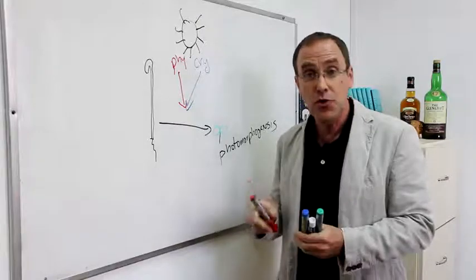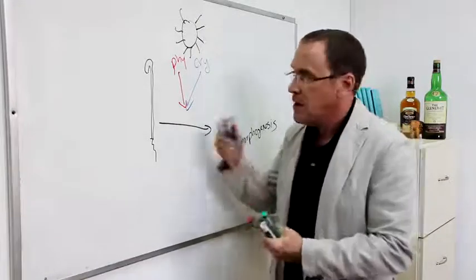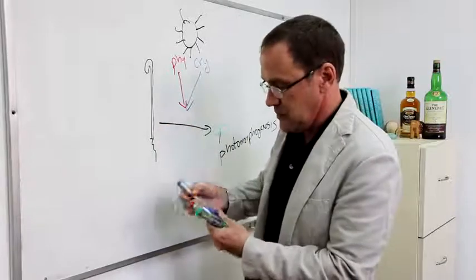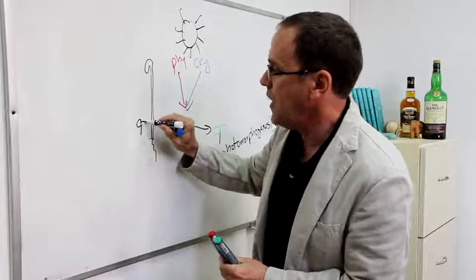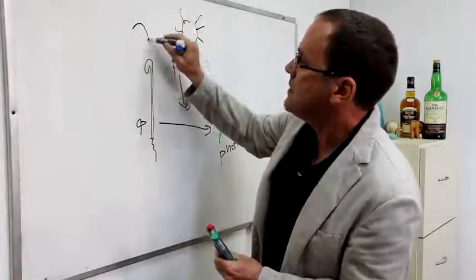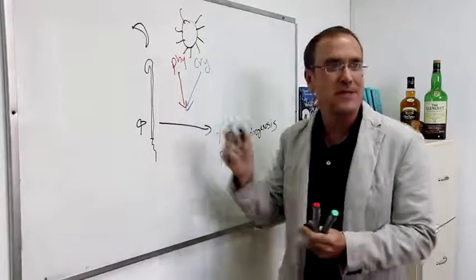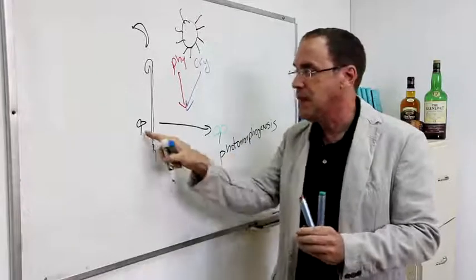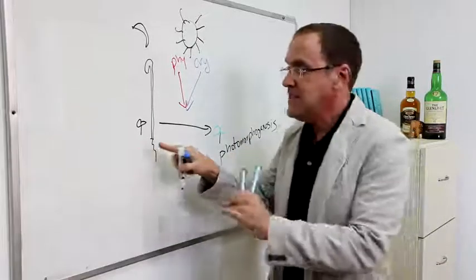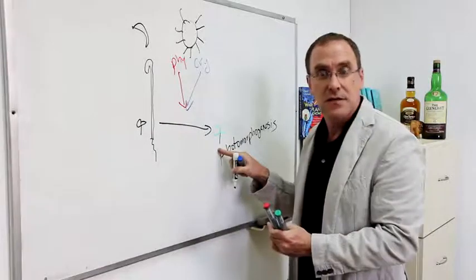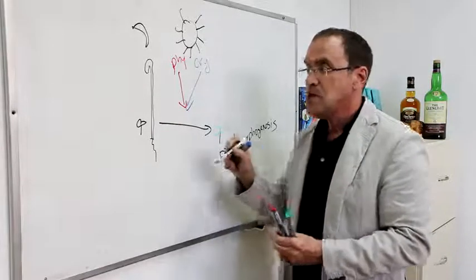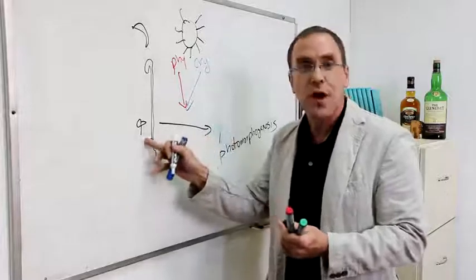We found mutant plants that when they were in the dark they were still short and they had open cotyledons even though, that's a moon there, because my drawing ability isn't the best in the world, even though they were in the dark. These seedlings in the dark look just like normal seedlings in the light. So the question was, what was wrong with these seedlings?